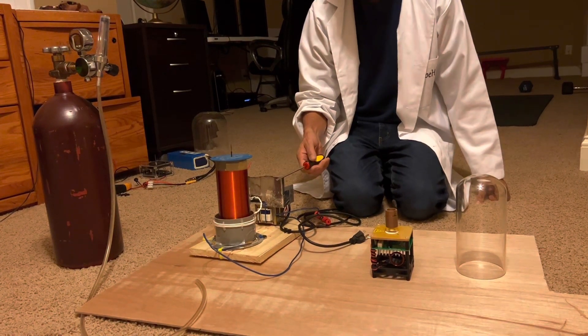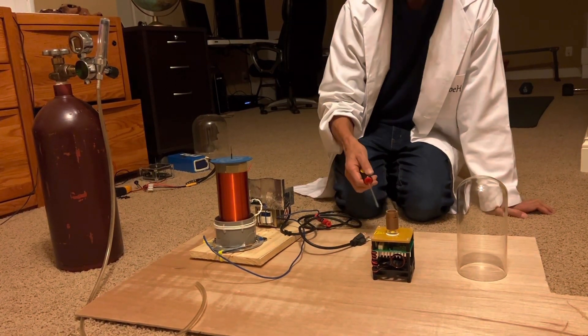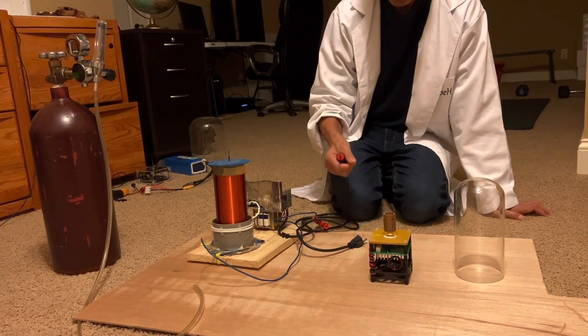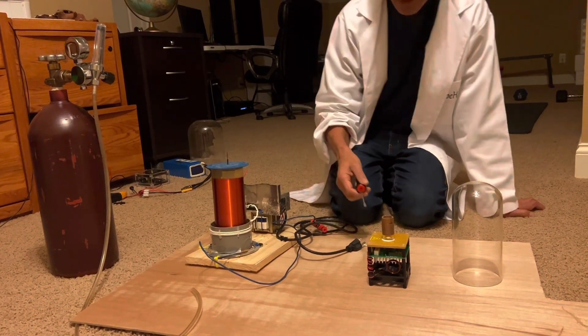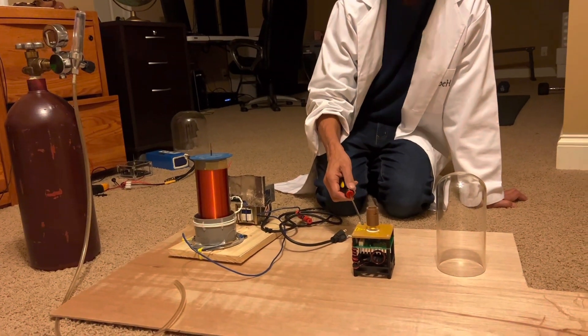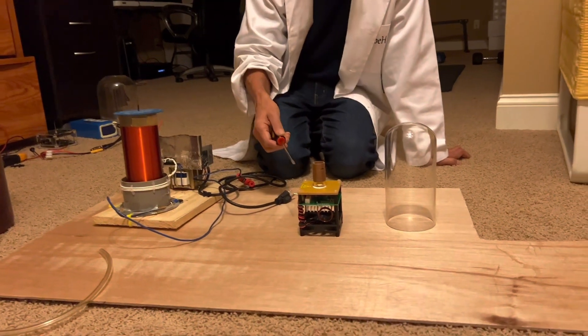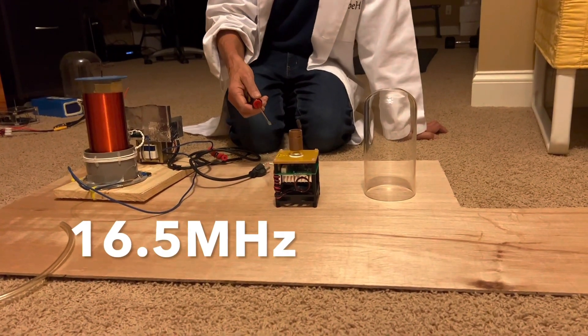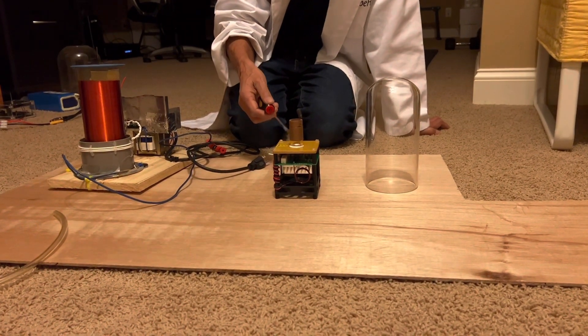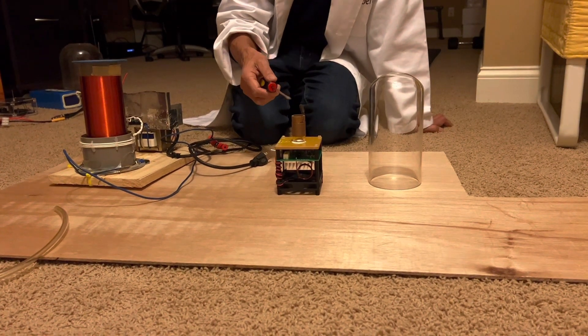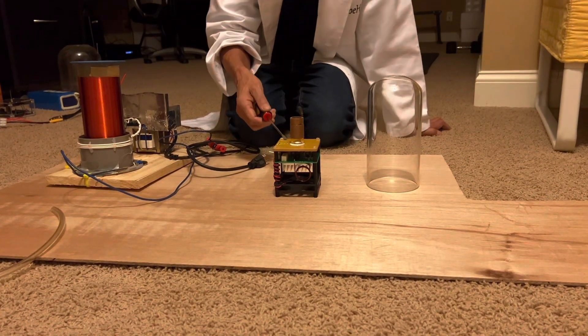Both of these are continuous wave Tesla coils. What that means is they run continuously with no pulsing. This is the first one, which is also known as a high frequency Tesla coil, and the reason for that is it runs at about 16.5 megahertz and produces a flame that looks a lot like a candle in regular air.